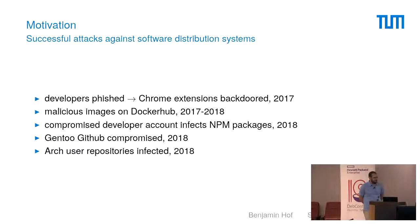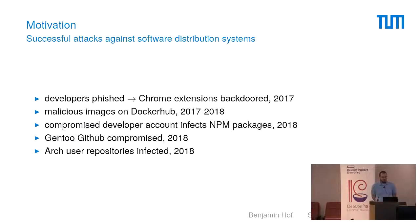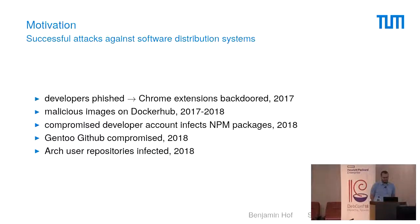There were problems with Chrome extensions where developers were phished — their credentials basically got lost and malicious extensions were uploaded. There were malicious images on Docker Hub, compromised NPM packages, the Gintu GitHub quite recently, and also quite recently the problem with the Arch user repositories where malicious packages were uploaded. The material and organizational structures in Debian are quite a strength in this regard, but nevertheless we should prepare for things going wrong.